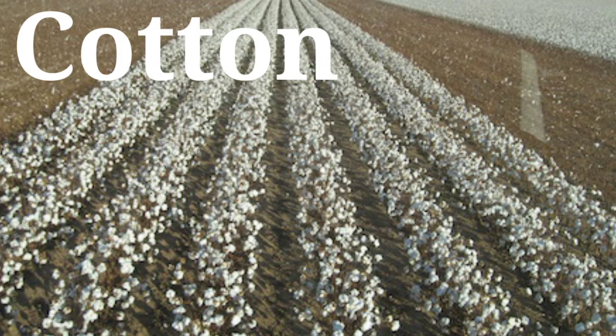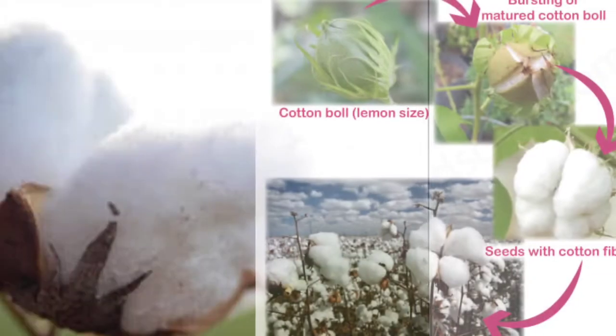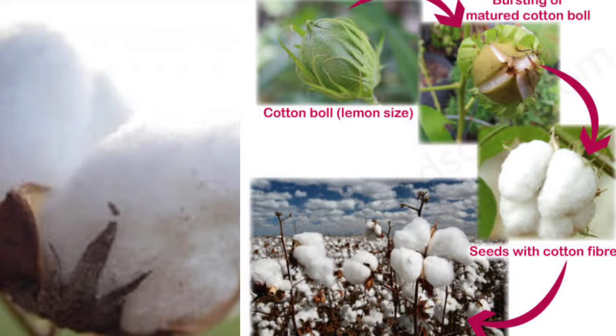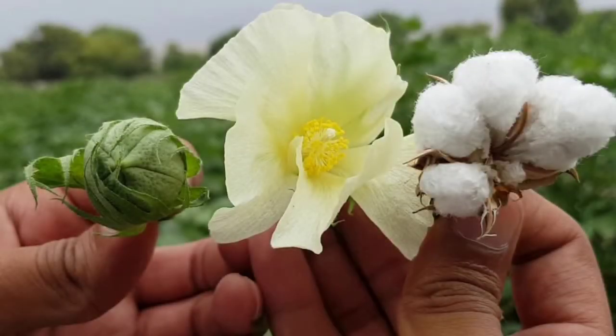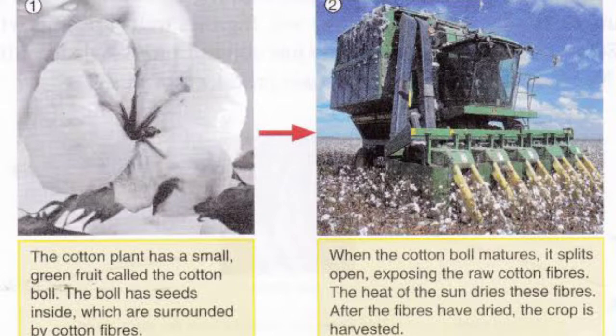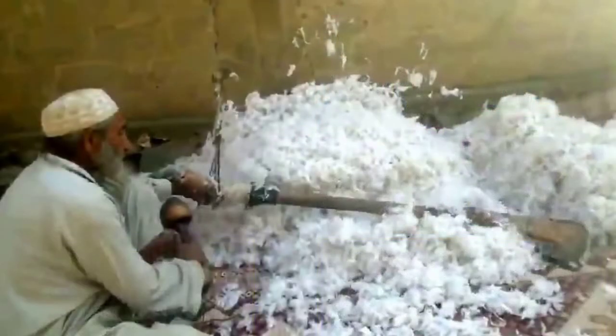Cotton is a soft fiber obtained from the seed pod of the cotton plant. Cotton seeds are planted in the spring season. When the plant matures, it starts flowering. The flowers develop into spherical fruit, known as cotton bolls. Seeds are present inside these cotton bolls, and the cotton fibers on the seeds grow to their full length. Harvesting of cotton bolls occurs only after the fibers inside have fully dried up by the heat of the sun.